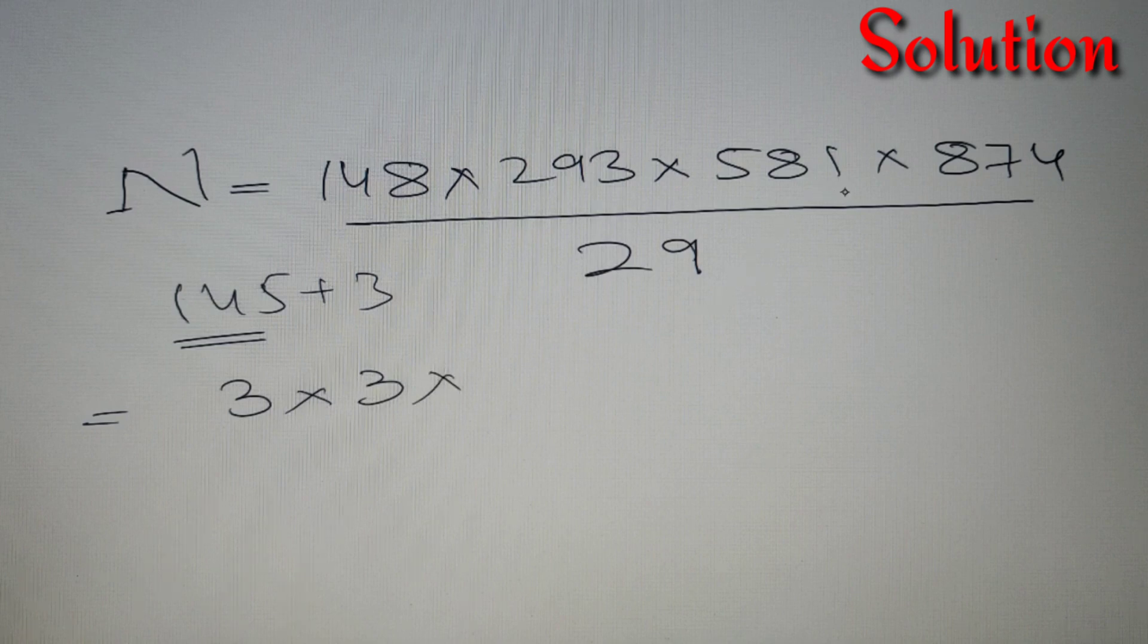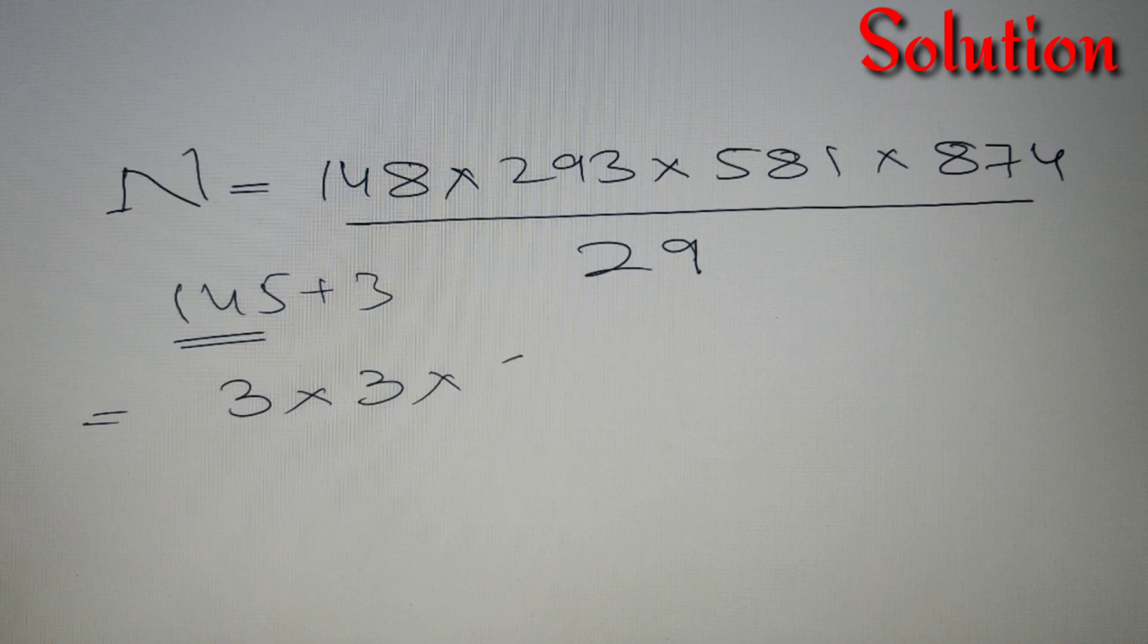Going to the third number 581, 290 into 2 is 580, so the remainder will be 1. Our final number is 874, which is equal to 290 into 3 plus 4. So the remainder will be 4.